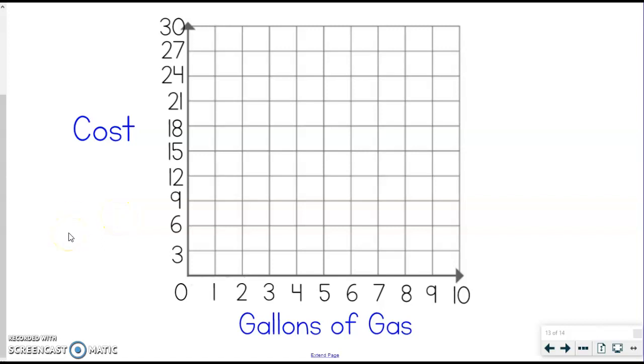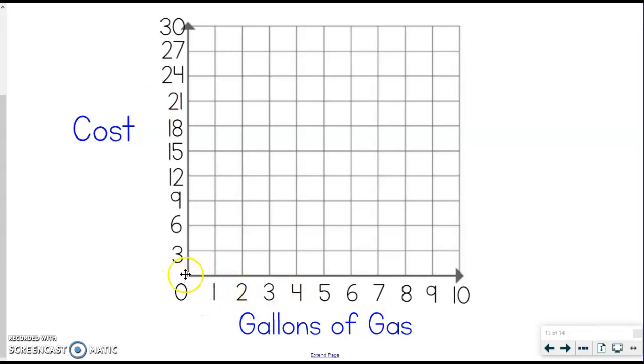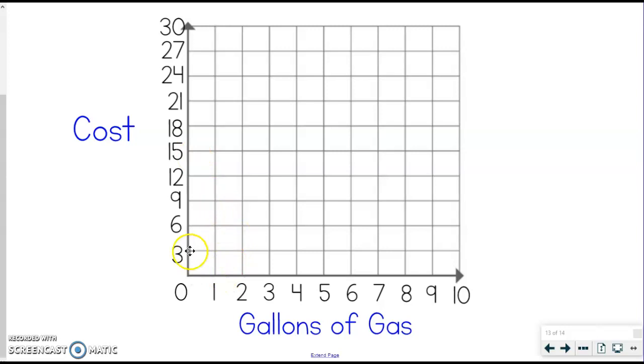So now that we have our graph set up, that's the hardest part is getting your graph set up. Now that you have it set up, now you can graph just the numbers on the table. So I need to graph this first point. These are kind of like our ordered pairs. So I've got one gallon of gas is going to cost me $3. So I'm going to go to my gallons of gas, which is my x. I'm going to run before I jump. I'm going to go over to the one here, and that is going to cost $3. I'm getting that from the table up here. So I don't need to count up three tick marks because remember I'm counting by threes over here. So all I need to do is go over one and up one, and there is my mark right there. Make sure you put your dot right there.